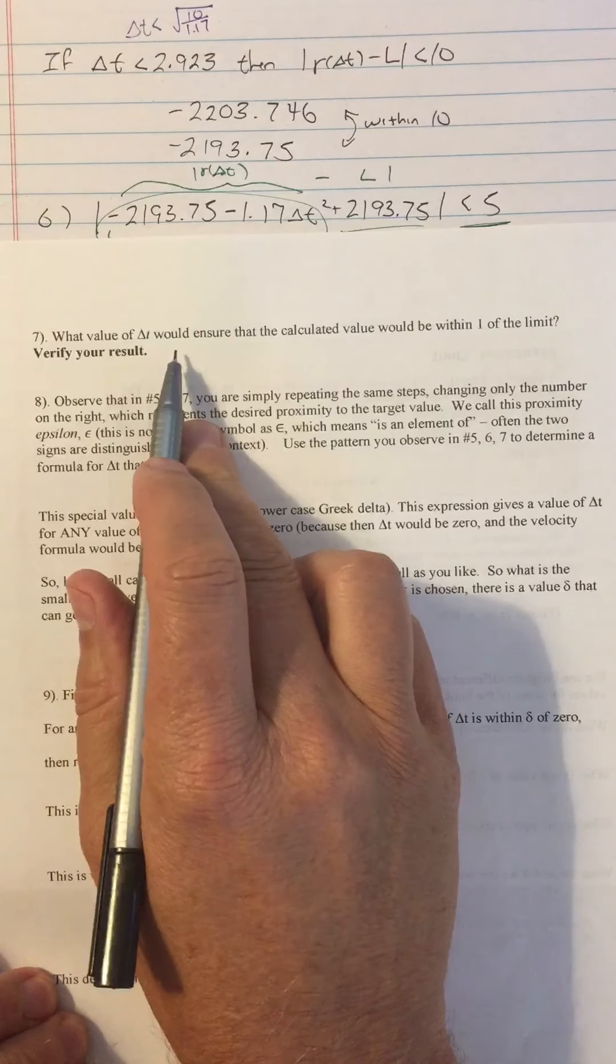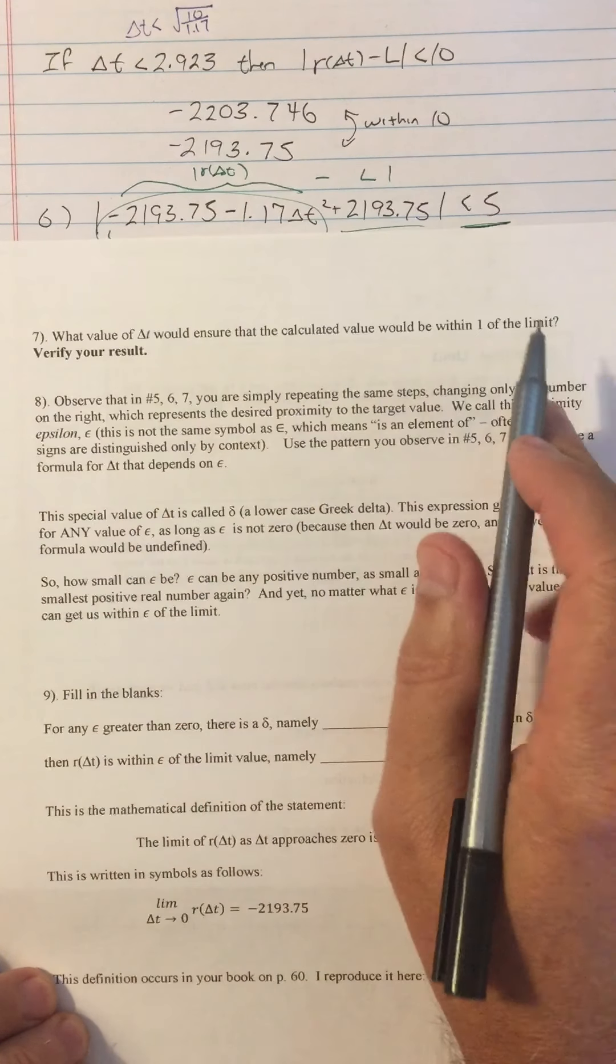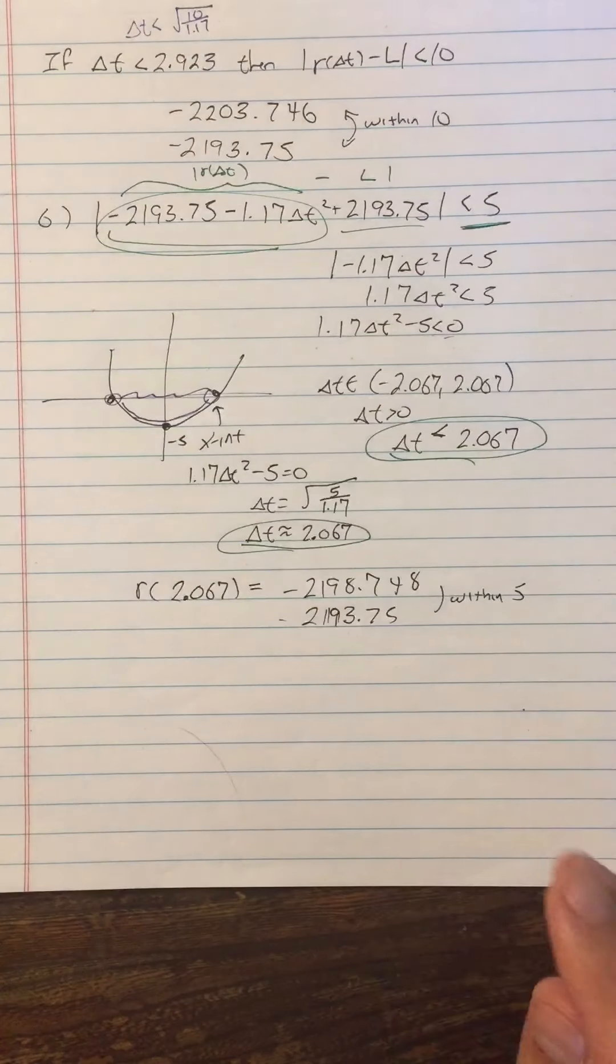So now we're up to number seven. What value of delta t would ensure that the calculated value would be within one of the limit?